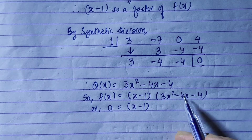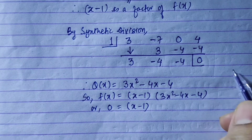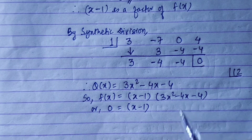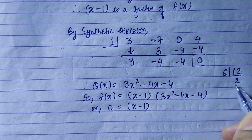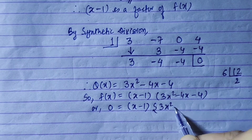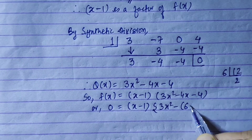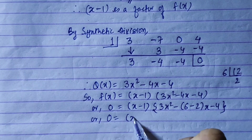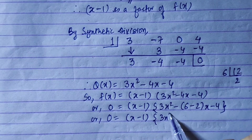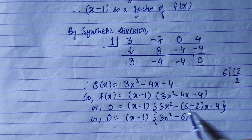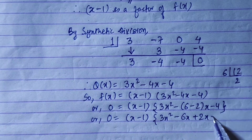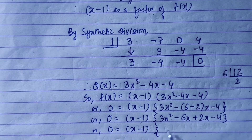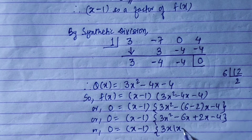Now we factor 3x² - 4x - 4 using the middle term method. 3 × 4 = 12. We split -4x as -6x + 2x since -6 × 2 = -12. So: 3x(x - 2) + 2(x - 2), giving us (3x + 2)(x - 2).